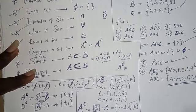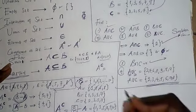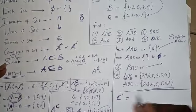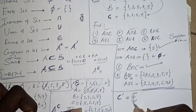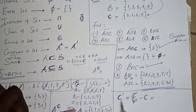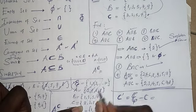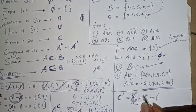What if I ask to find C complement, C prime? C prime means universal set minus C, right? That would give us: remove 2, remove 3, remove 5, and remove 7. I'll be left with whatever I have left in the universal set, which gives me my final answer, just like what I've done.